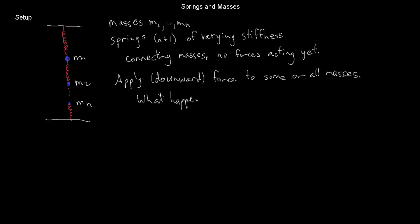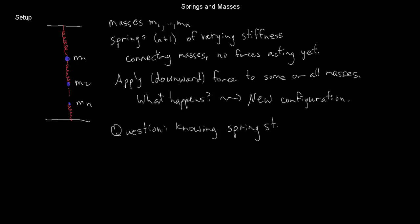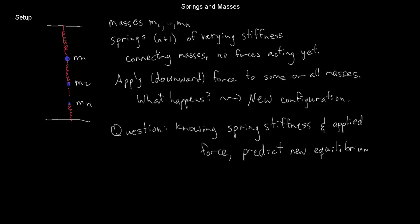What happens when I apply some forces? Well, a new configuration is exactly what happens. The question I want to ask is: if I know all the spring stiffnesses, and I know exactly what force I apply, can I predict the new equilibrium position of the masses? They started out in equilibrium, presumably. And the answer is yes — or we wouldn't be watching this video. The whole video is about seeing exactly how that's done, analyzing the situation prior to actually constructing the experiment.